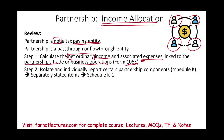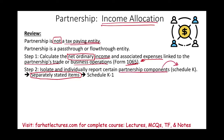Then we have certain activities that affect each partner separately and differently. Those items we have to list separately. They are called separately stated items. We are going to isolate and individually report certain partnership components, reporting them on Schedule K, then from Schedule K to Schedule K-1.